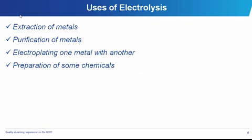Uses of electrolysis: it is used in the extraction of metals, the purification of metals, preparing some chemicals, and also in the electroplating of metals. Electroplating of metals simply involves protecting metals by laying another type of metal over the first metal that is to be protected.